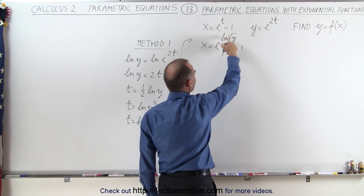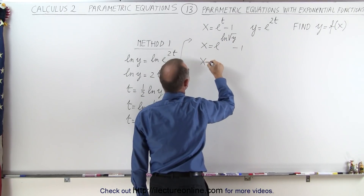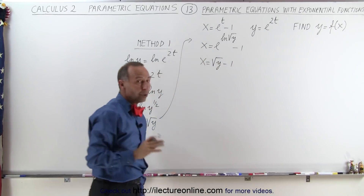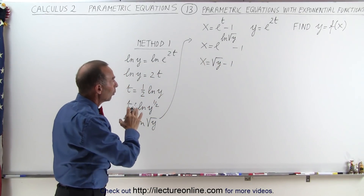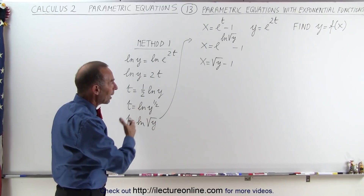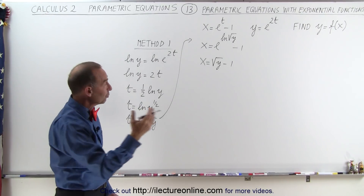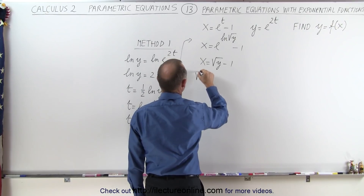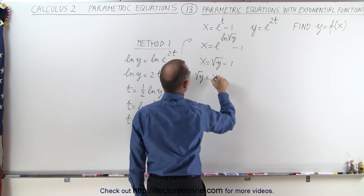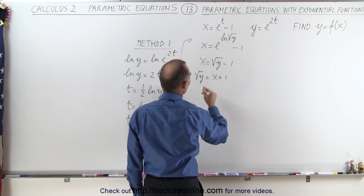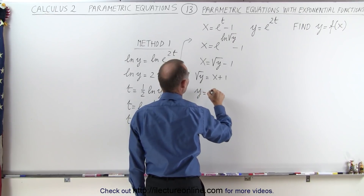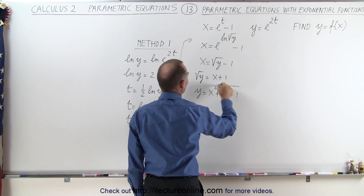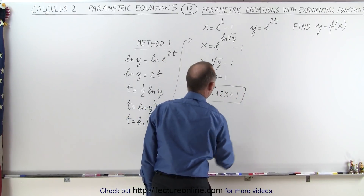e to the natural log negates, and we get x equals the square root of y minus 1. Now we don't want x in terms of y, we want y in terms of x. So we move the negative 1 over: the square root of y equals x plus 1. Squaring both sides gives y equals x squared plus 2x plus 1.